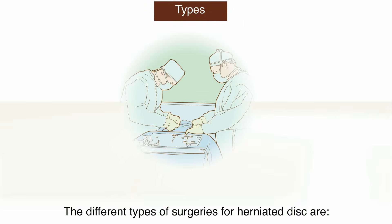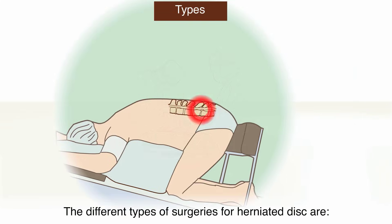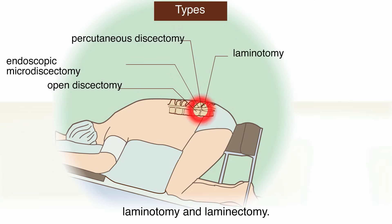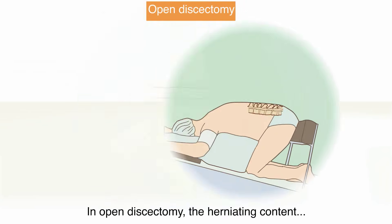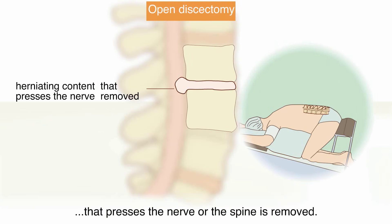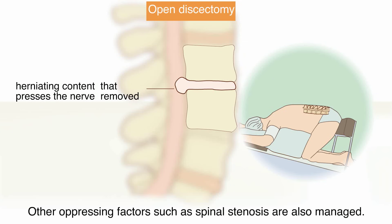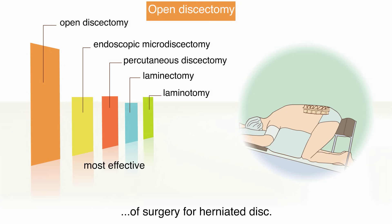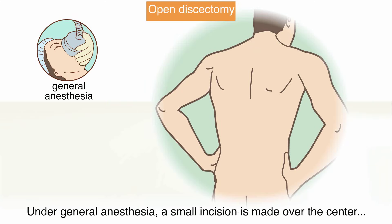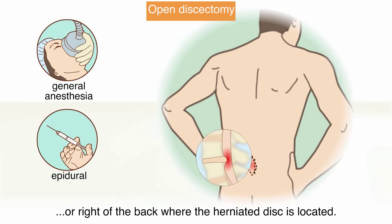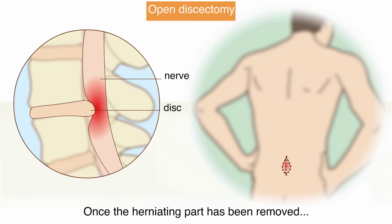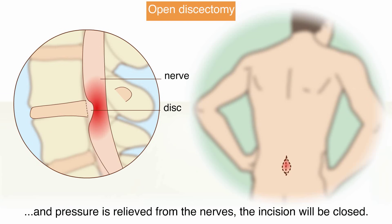The different types of surgeries for a herniated disc include open discectomy, in which the herniating content that oppresses the nerve or the spine is removed. Other oppressing factors such as spinal stenosis are also managed. This procedure is considered the most effective type of surgery for a herniated disc. Under general anaesthesia, a small incision is made over the centre or right of the back where the herniated disc is located. Once the herniating part has been removed and pressure is relieved from the nerves, the incision will be closed.